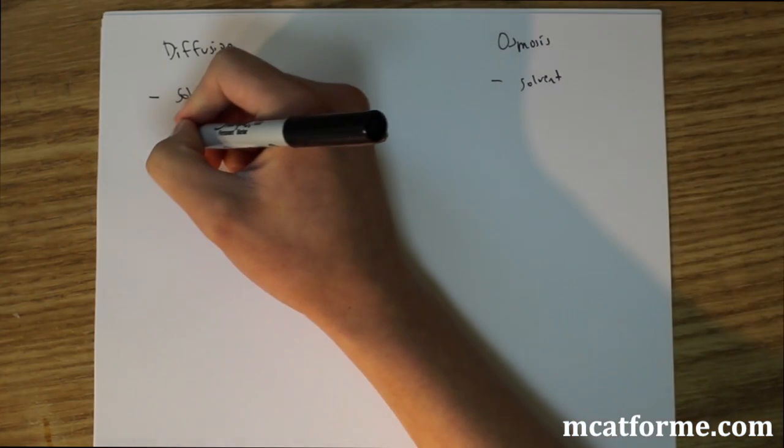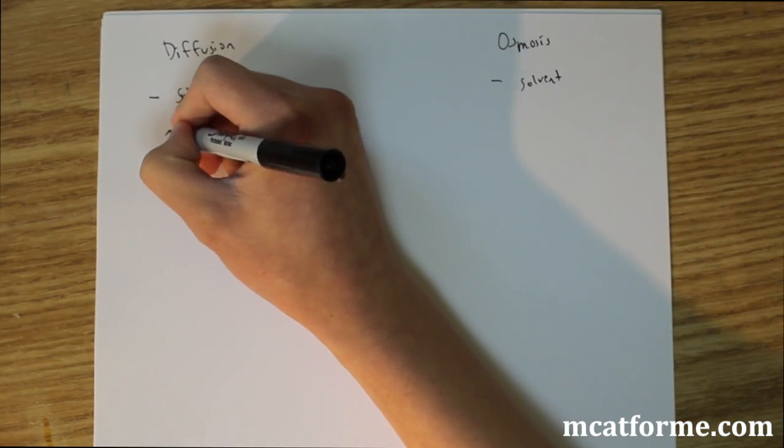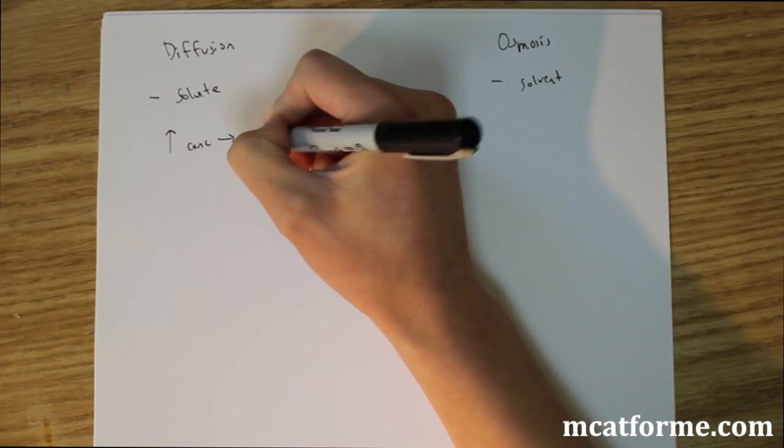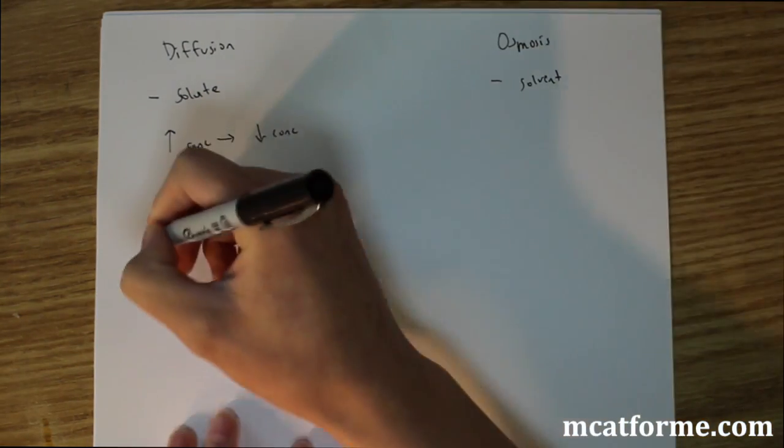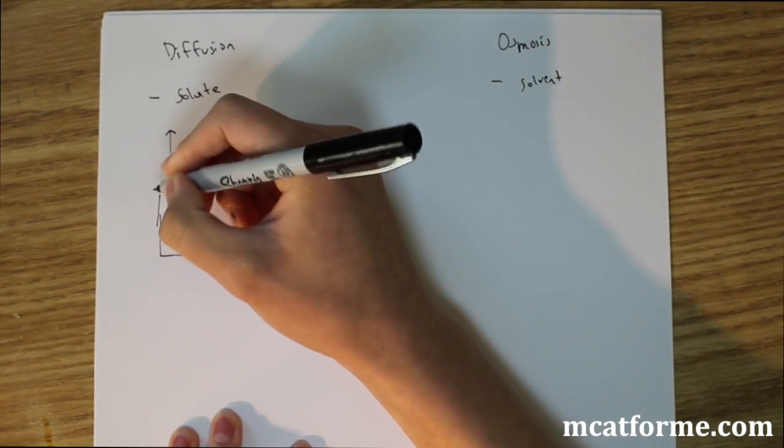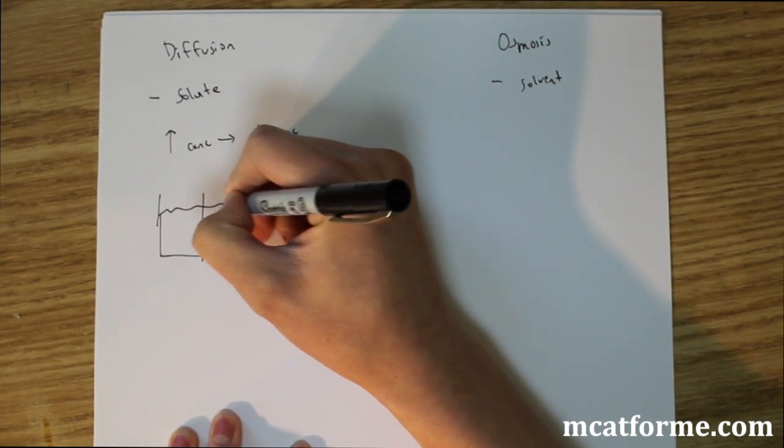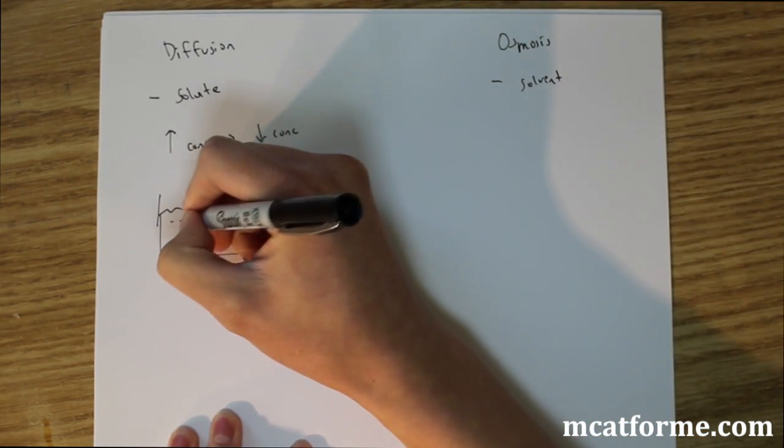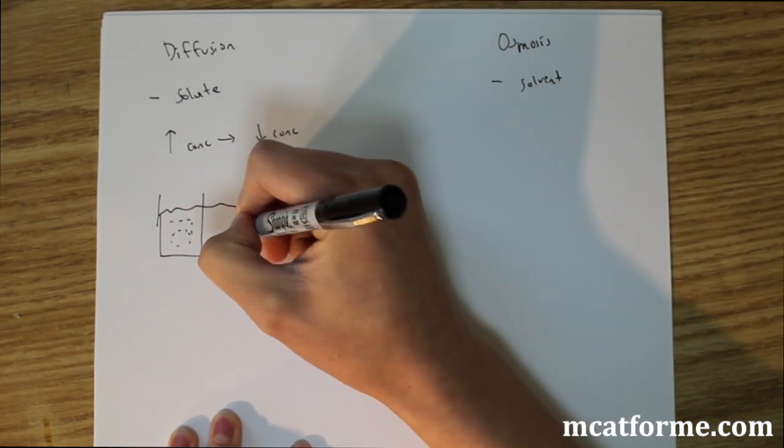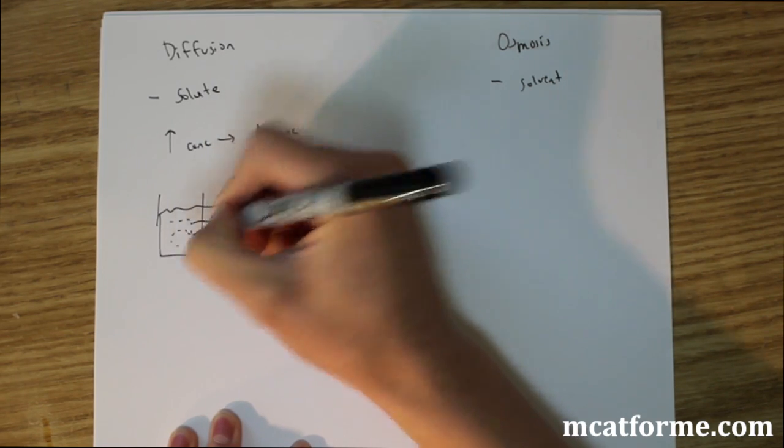So the solute and diffusion will move from the higher concentration down to a lower concentration. And so if you can imagine something like this. And we have a semipermeable membrane like that. So it's going to have an equal height in the two. But if you have a high concentration over here and a small concentration, these guys are going to flow to the right.